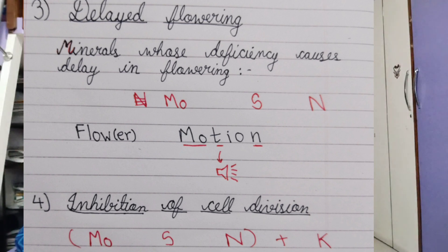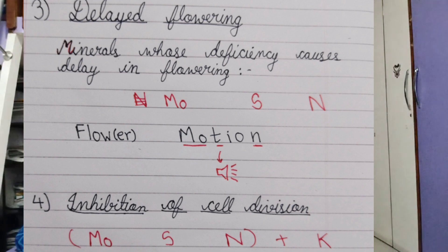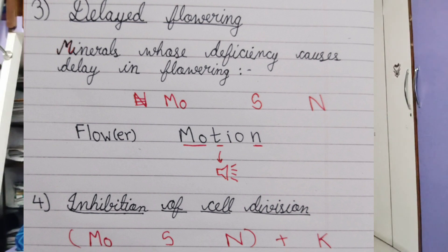The last deficiency symptom is inhibition of cell division. The minerals that cause this are the same as those for delayed flowering — molybdenum, sulfur, and nitrogen — with potassium added. So just remember: the first three minerals are the same as delayed flowering; simply add potassium to get the full set for inhibition of cell division.